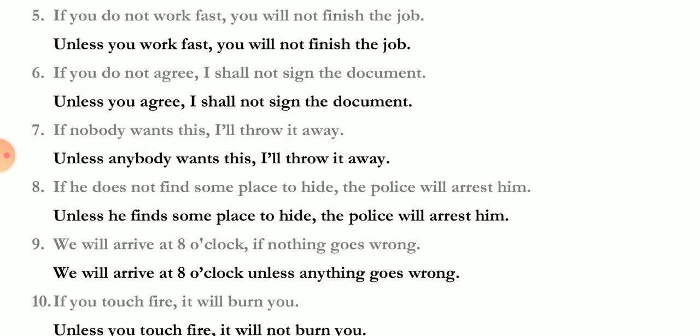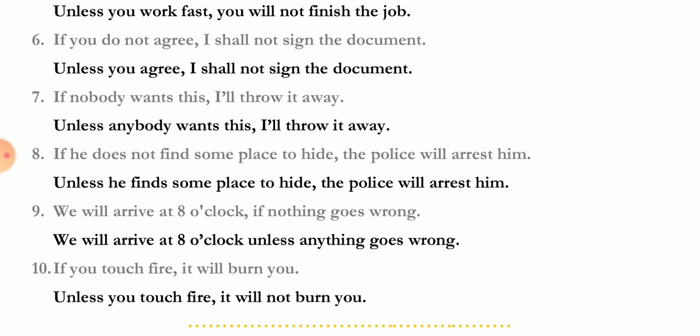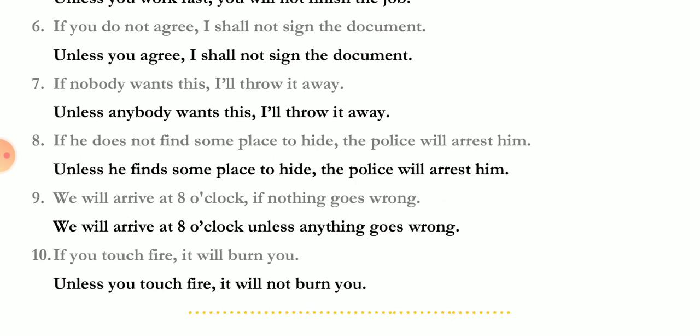'We will arrive at eight o'clock if nothing goes wrong.' 'Nothing' means 'not anything', so: 'We will arrive at eight o'clock unless anything goes wrong.' 'If you touch fire, it will burn you' — here there is no 'not' in the if-clause, so we add 'not' to the main clause: 'Unless you touch fire, it will not burn you.' And that's all for conditional sentences.